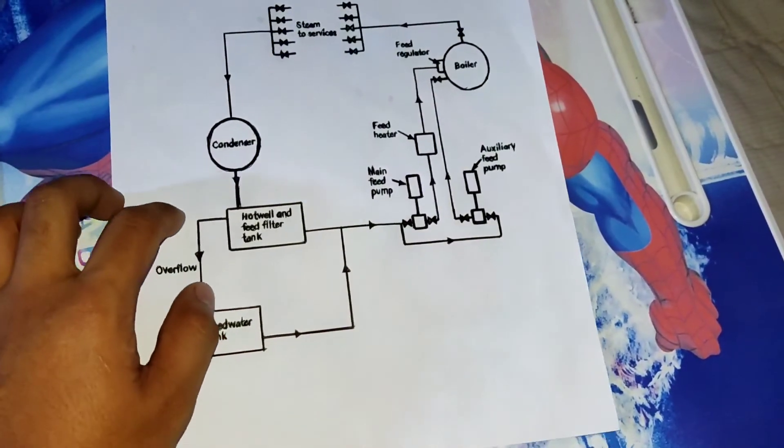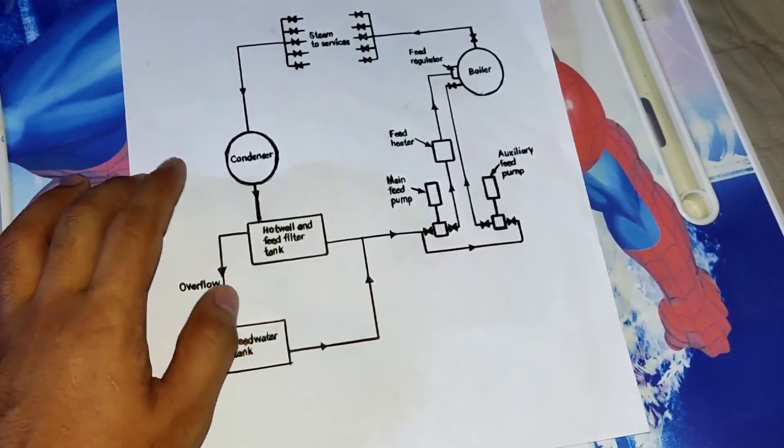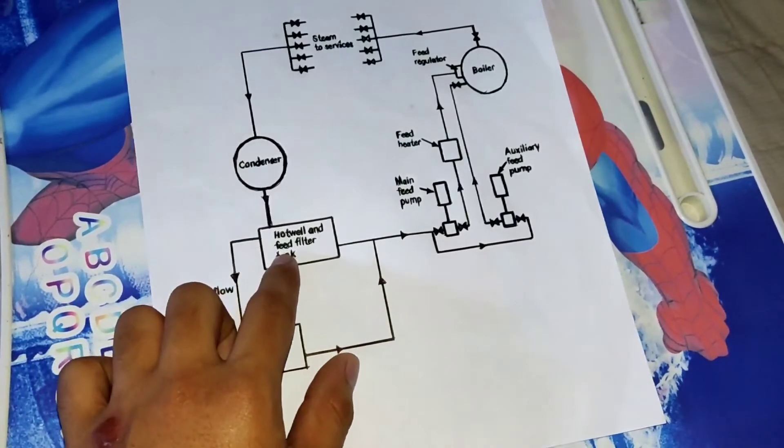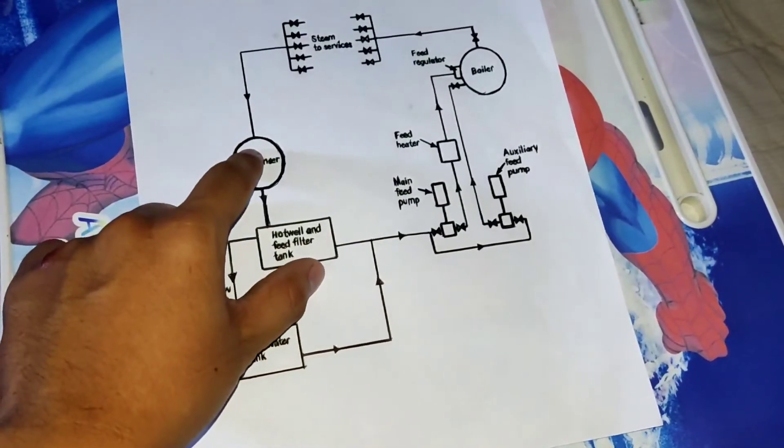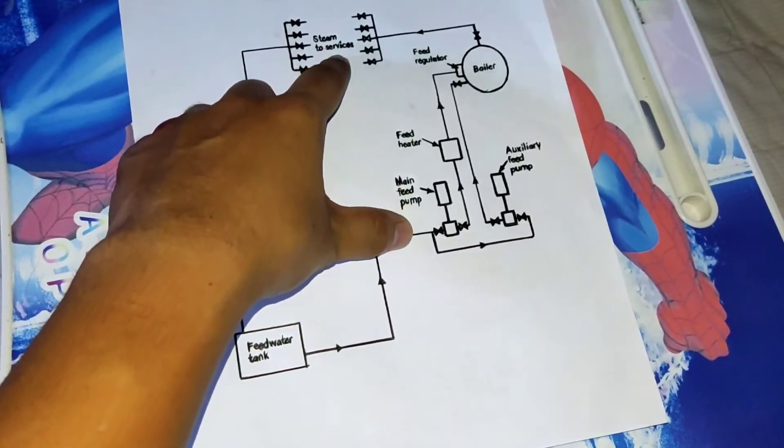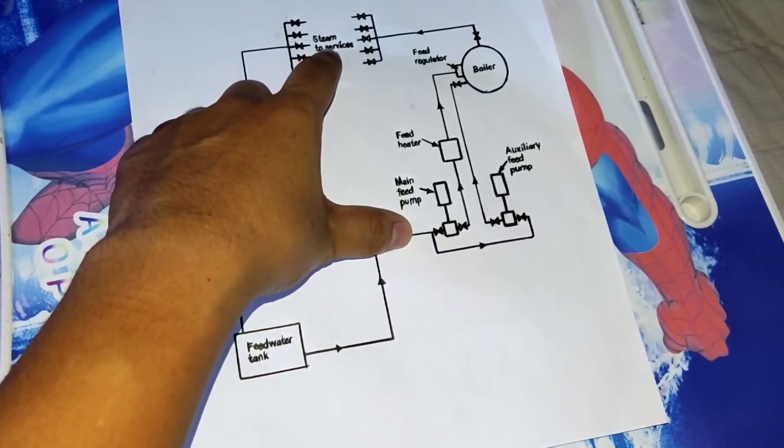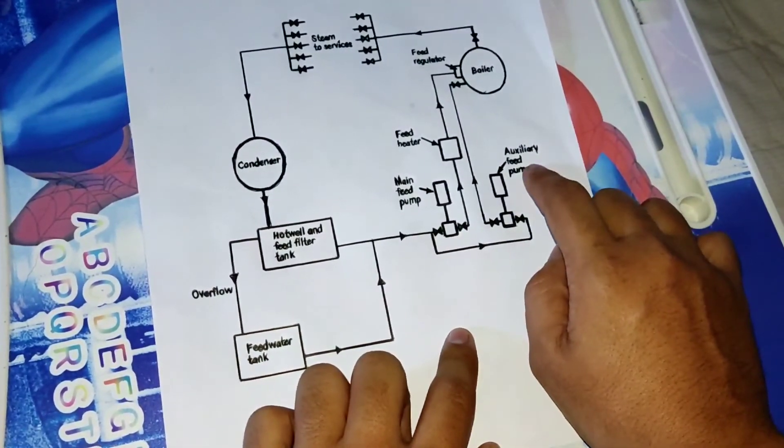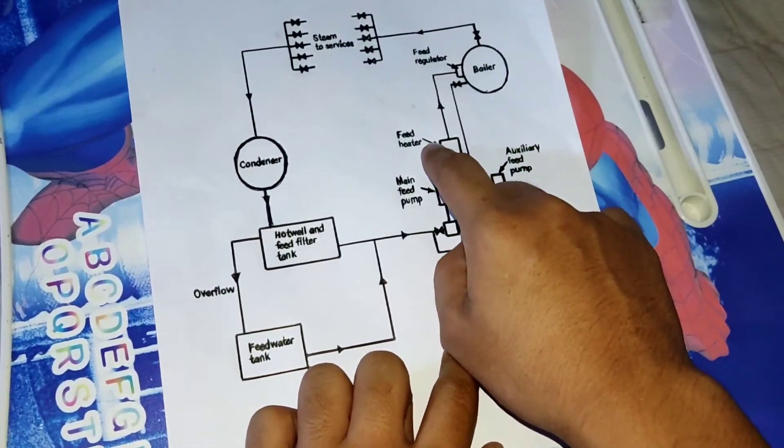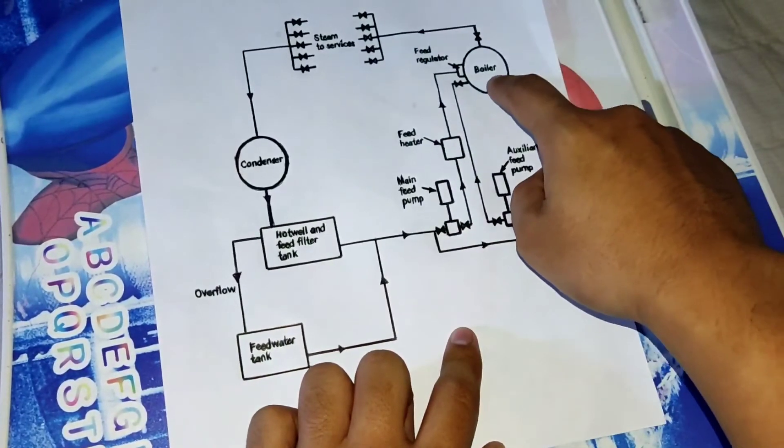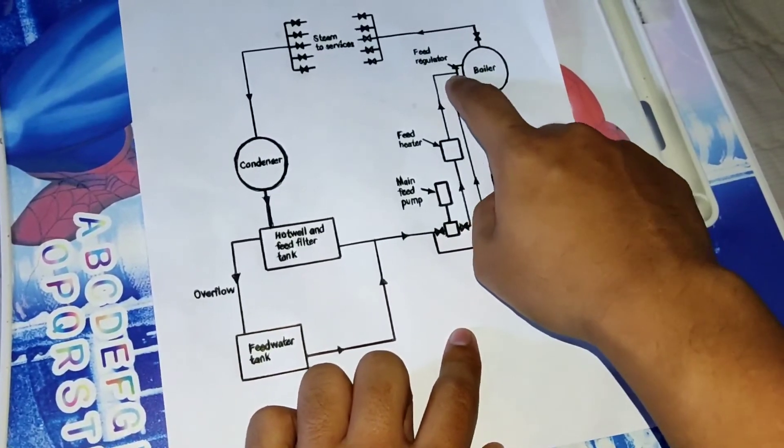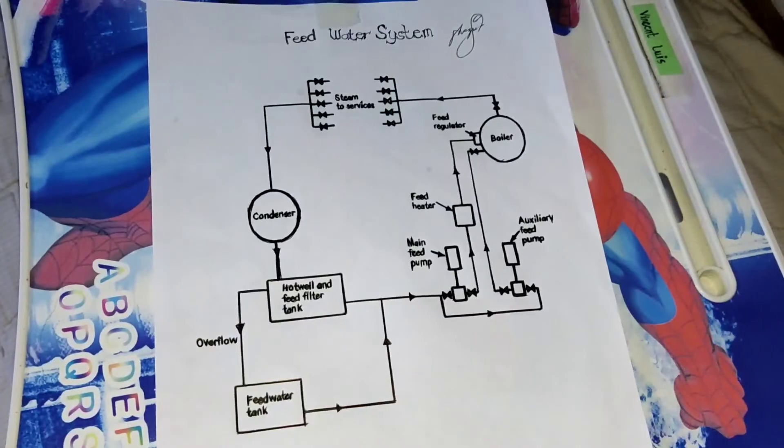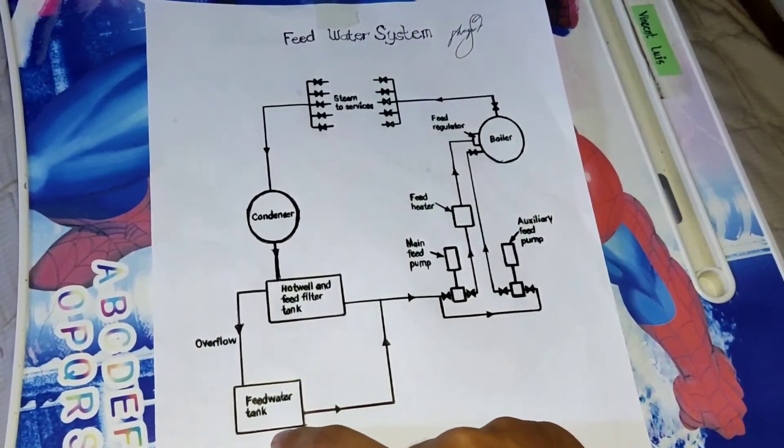So we have here the feed water system diagram. Here the feed water tank, the hot well, the condenser, the steam services, the steam consumers, the main feed pump, auxiliary feed pump, auxiliary stream. We also have here the feed regulator. Let us start here in the feed water tank.